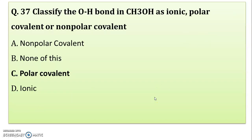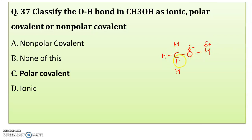Classify the OH bond in CH3OH as ionic, polar covalent, or non-polar covalent. In methanol (CH3OH), oxygen is highly electronegative and hydrogen is highly electropositive, so fractional charges develop — making the bond polar. The bond type present is covalent. So it is not non-polar covalent or ionic. The correct answer is polar covalent.